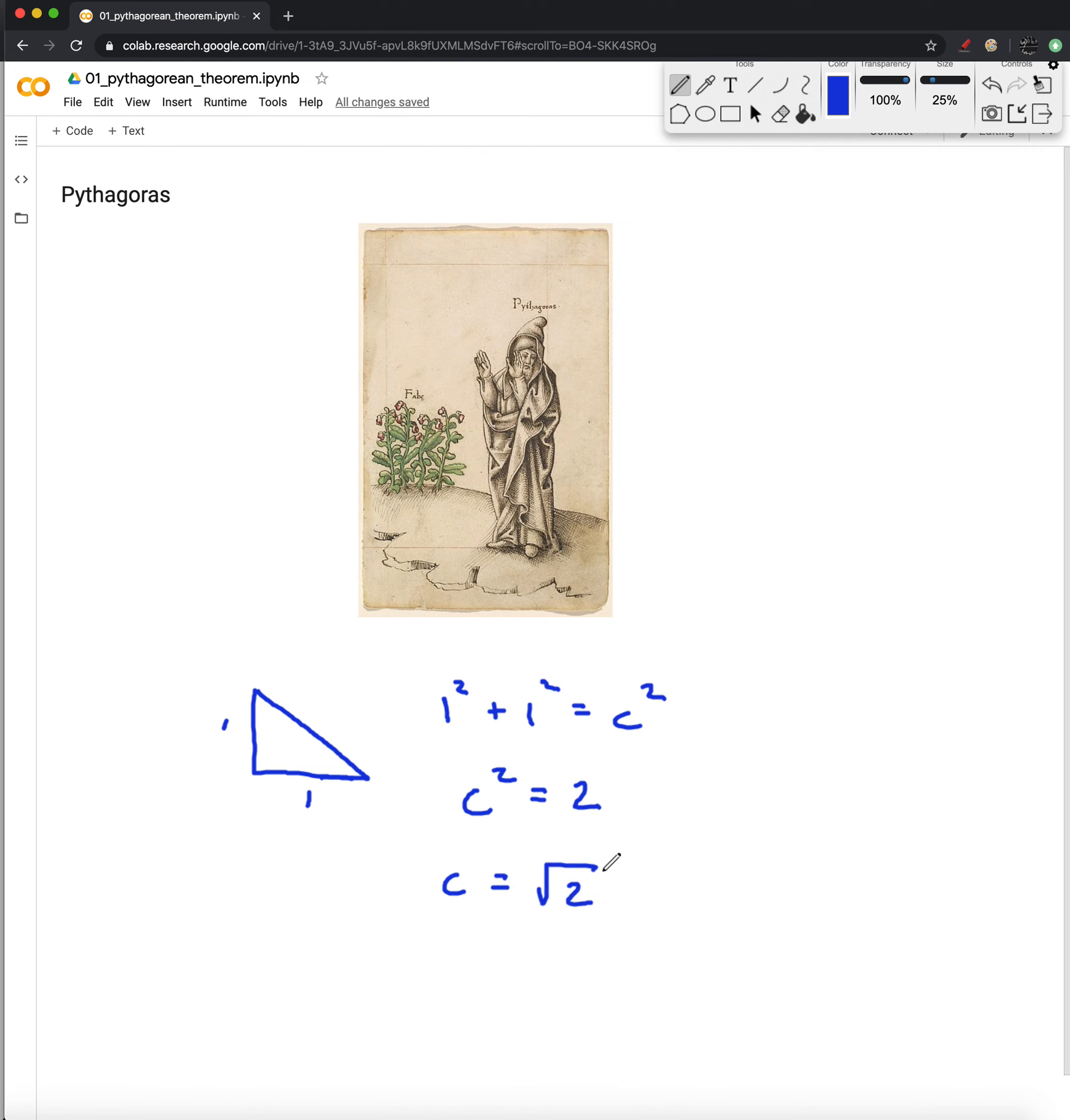But what if we want to write this in a familiar kind of way, as a decimal number? How do we do that? That's our first problem.